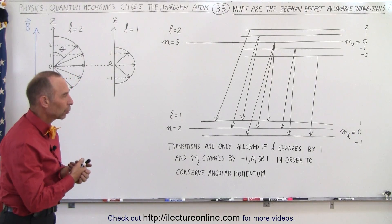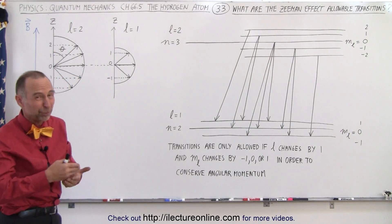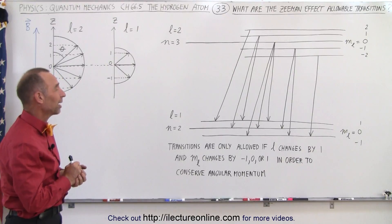Remember, m sub l is the magnetic orbital quantum number, or orbital magnetic quantum number, however you want to pronounce that.